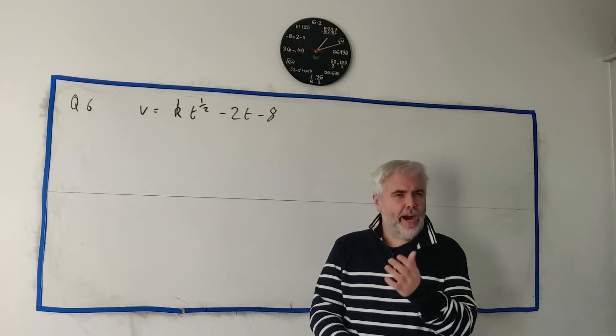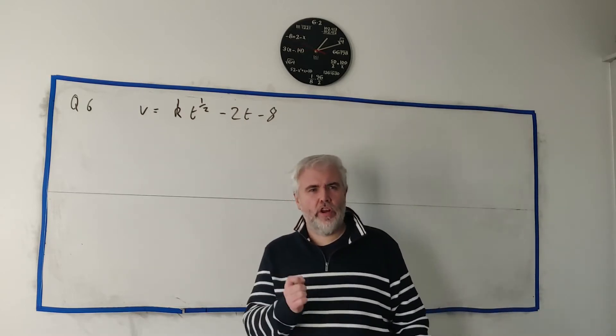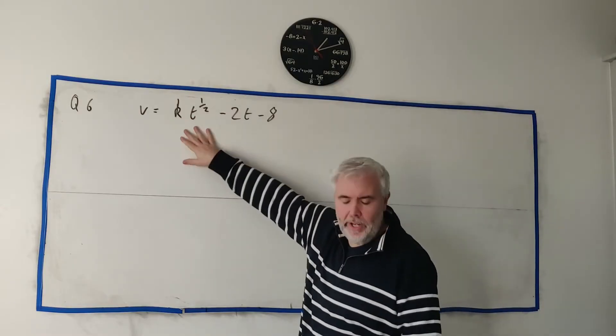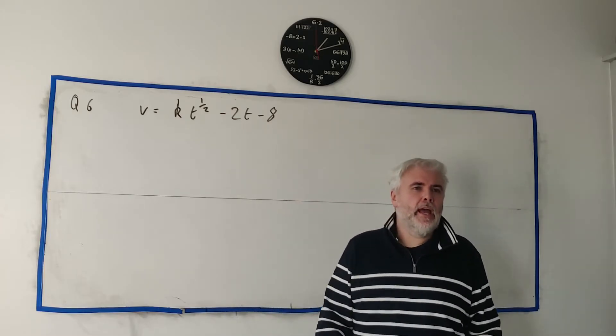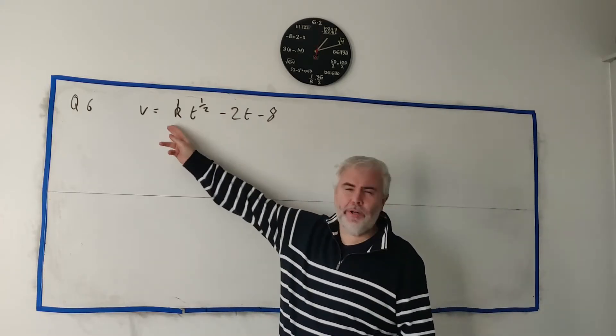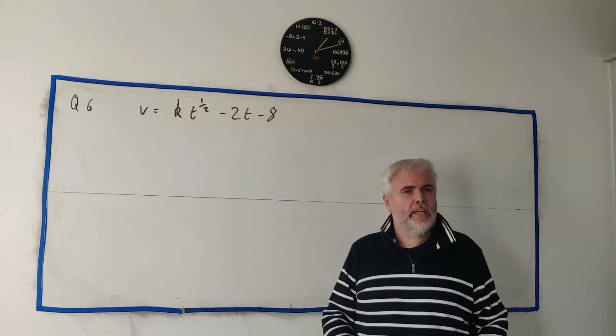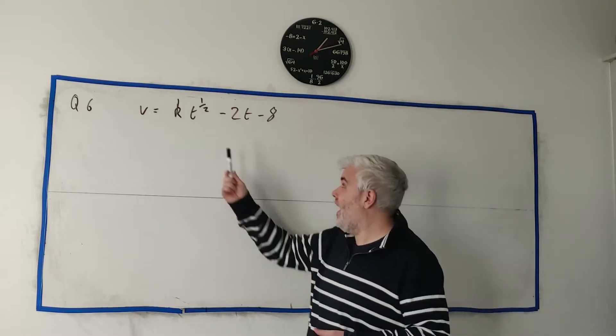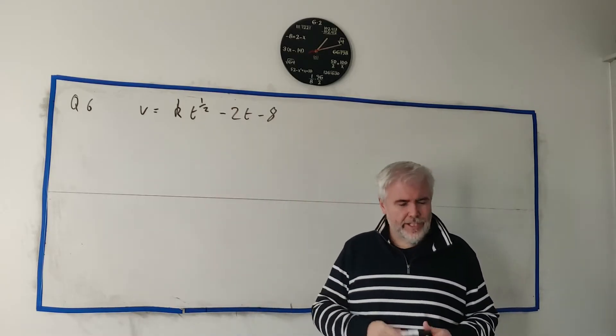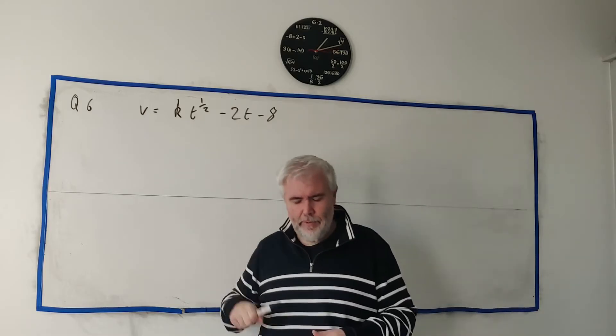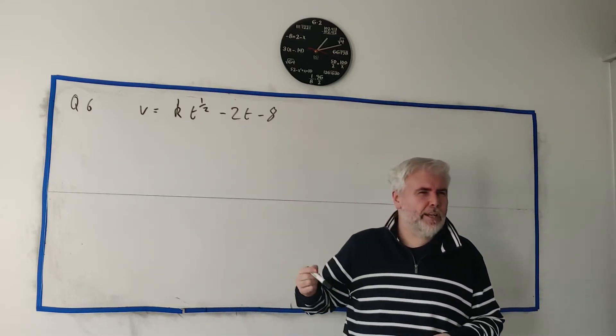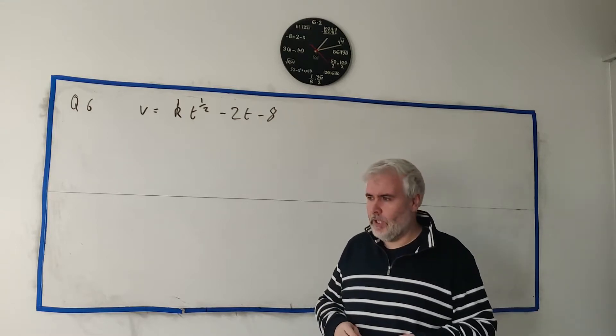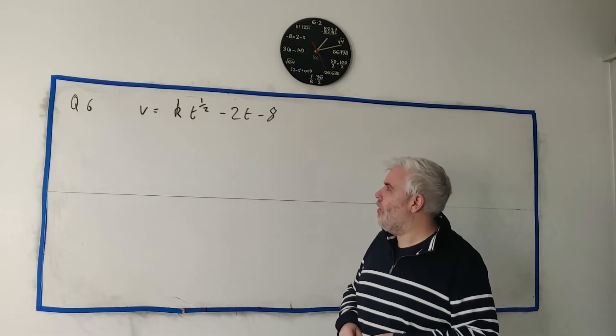In question 6 they talk about a particle that's moving in a straight line, but it has a velocity given by this equation here, so a lot more complex than we're used to. They tell us the maximum this number can get to, that v can get to, is 4.5 and they want us to show that k is equal to 10. There's two ways to do this. I'll do it the most common way first and then I'll pretty much do it the second way as well, using just maths, completing the square, just a bit of algebra.